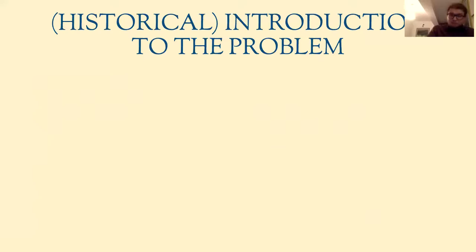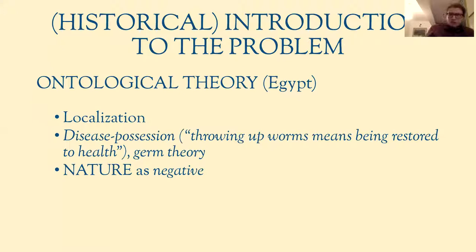For the introduction, Canguilhem gives a brief historical sketch of this 'quantitative pathology.' In the ancient world there were two approaches to studying diseases. One was the ontological theory developed in Egypt, which depended heavily on the localization of external pathogens that entered the body. It was very important to expel the external pathogen, to localize and expel it to end what was seen as a kind of disease-possession. Expelling worms, for instance, meant being restored to health.